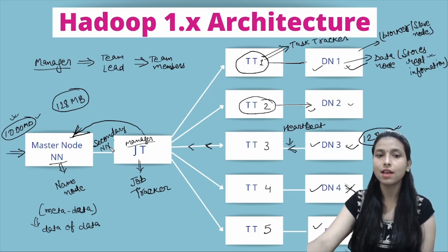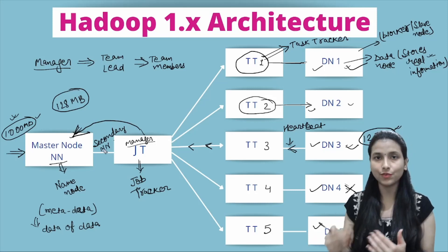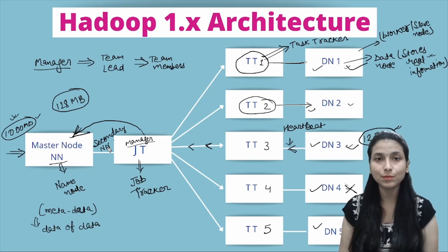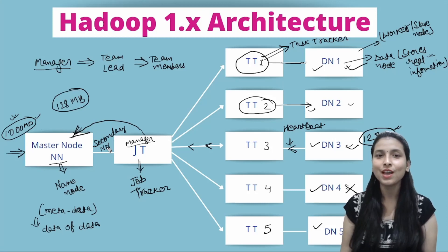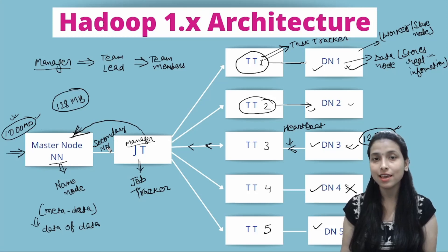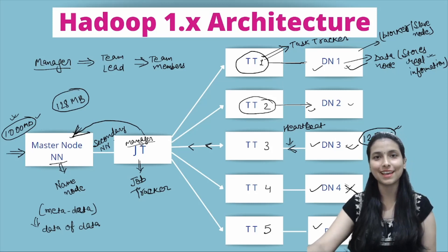I will be discussing the concept of the Secondary Name Node in the next video. Along with that, I will cover the concept of FS Images, which is very important with respect to Hadoop. If you haven't subscribed to this channel, please subscribe to get the latest videos. I hope you understood the architecture of Hadoop 1.x. If you have any confusion, ping in the comment section — I'll be happy to reply. Keep learning and stay tuned!